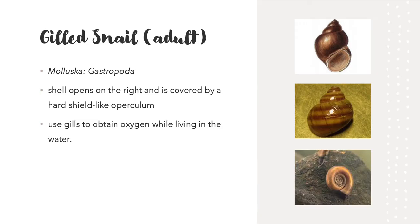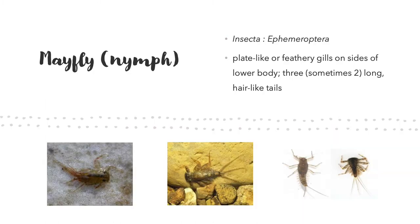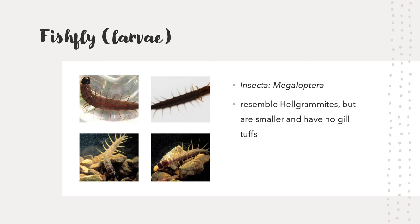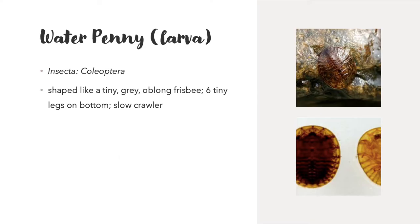The adult gilled snail uses gills to obtain oxygen while living in water, and their shells typically open to the right. Mayfly nymphs have plate-like or feathery gills on the sides of their lower body, and three, or sometimes two, long hair-like tails. Fishfly larvae resemble hellgrammites but are smaller and have no gill tufts. The water penny larvae are shaped like a tiny, gray, oblong frisbee with six tiny legs on the bottom, and they are slow crawlers.